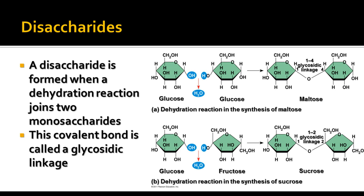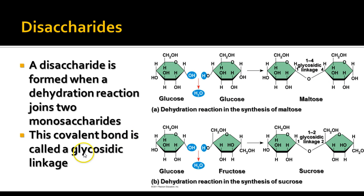Disaccharides are formed when a dehydration reaction joins two monosaccharides together. Here we show two glucoses — we remove a hydroxyl from one and the hydrogen from the hydroxyl on the other, and they're joined together through the oxygen. This is called a glycosidic linkage. You need to know the term glycosidic linkage — it's really important in carbohydrate chemistry.